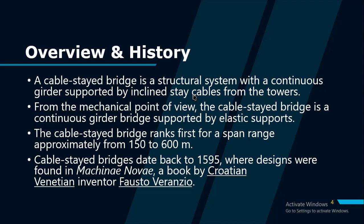A cable-stayed bridge is a structural system with a continuous girder supported by inclined stay cables from the towers. From the mechanical point of view, the cable-stayed bridge is a continuous girder bridge supported by elastic supports. The cable-stayed bridge ranks first for a span range of approximately 115 to 600 meters, which has longer spanning capacity than that of cantilever, truss, arch, and box girder bridges, but shorter than that of suspension bridges.